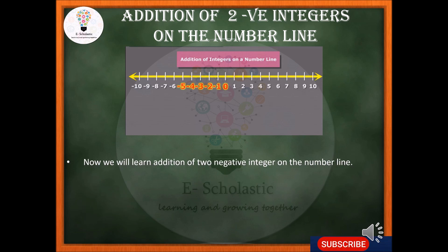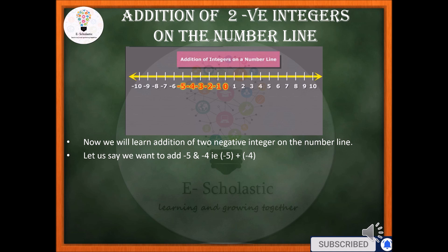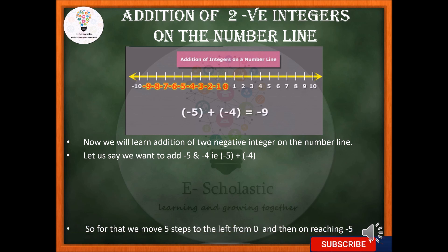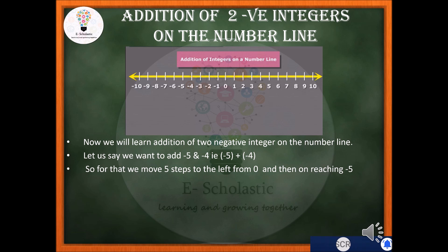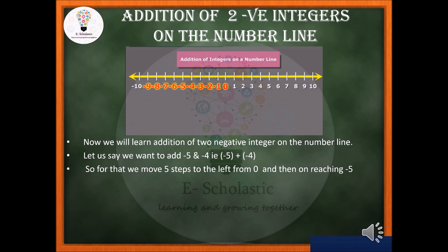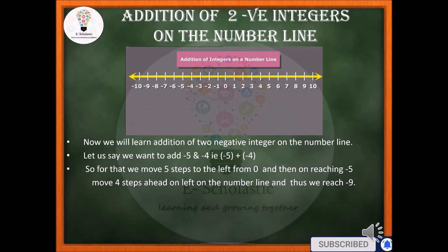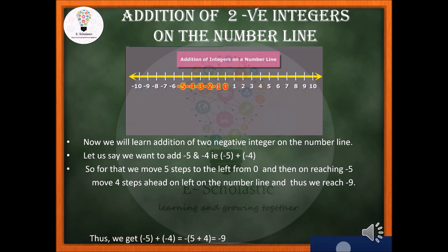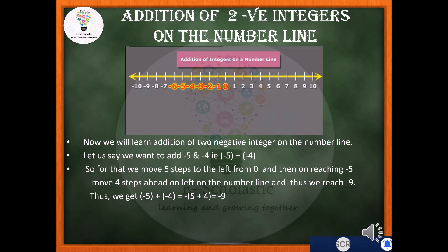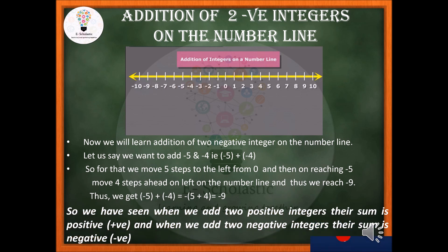To add two negative integers on a number line — say minus 5 plus minus 4 — we move 5 steps to the left of zero on the negative side. On reaching minus 5, we move 4 more steps to the left, and thus reach minus 9. So minus 5 plus minus 4 equals minus 9. When we add two positive integers, their sum is positive; when we add two negative integers, their sum is always negative.